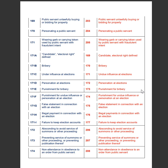Section 172 of the IPC deals with absconding to avoid service of summons or other proceedings, whereas Section 206 of the BNS deals with absconding to avoid service of summons or other proceedings. Section 173 of the IPC deals with preventing service of summons or other proceedings or preventing publication thereof, whereas Section 207 of the BNS deals with the same. Section 174 of the IPC deals with non-attendance in obedience to an order from public servant, whereas Section 208 of the BNS deals with the same.